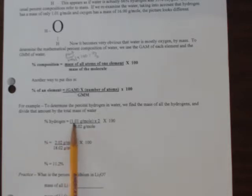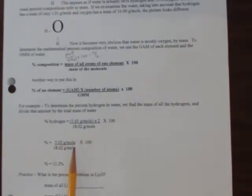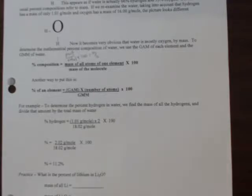For the water molecule, the percent hydrogen — since there are two H's — you take the gram atomic mass of hydrogen to two decimal places, multiply it by two, and divide that by the molar mass of the whole molecule. There's also a slightly different way you can look at this.